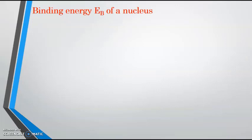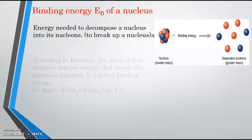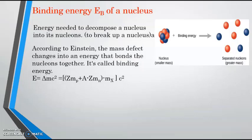We call the energy of a nucleus the binding energy. What does it represent? Energy needed to decompose a nucleus into its nucleons, to break up a nucleus. We know that the nucleus is formed of nucleons. For the nucleus, if we want to separate these nucleons, we need an energy. This energy is called the binding energy. If we add binding energy to any nucleus, the nucleons are separated from each other and they will have a greater mass. According to Einstein, the mass defect changes into an energy that bonds the nucleons together. It is called binding energy, E equal Delta M C square.